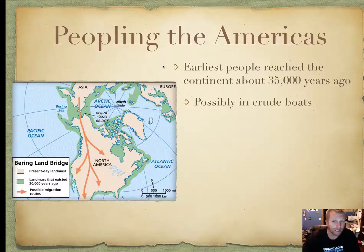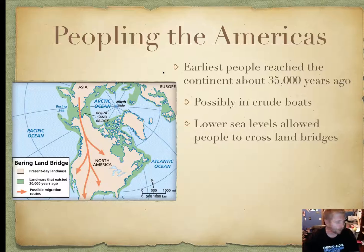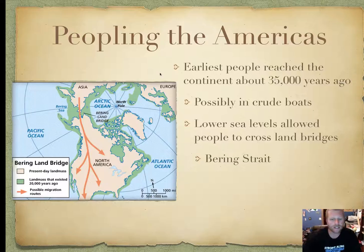They possibly came in crewed boats. There is some evidence that maybe they didn't just walk. Most people accept it was a land bridge. They followed evidence of artifacts from people, bone evidence and things they left behind using the Bering Strait. So we were populated by people crossing from what is now Russia.